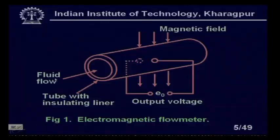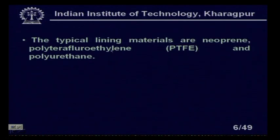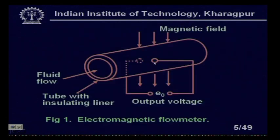The line connecting the two electrodes and the direction of the magnetic field and the flow direction are all mutually perpendicular to each other. The fluid flows through the pipe with the insulating liner. We produce the magnetic field with proper coils, and two sensors are installed on diametrically opposite sides. The output voltage is calibrated in terms of flow.